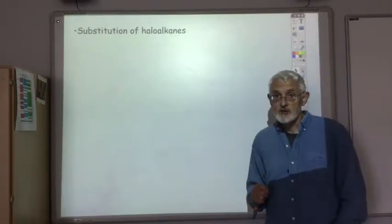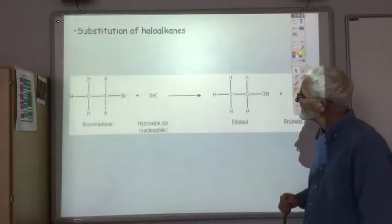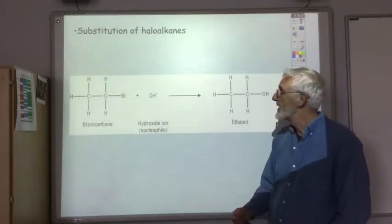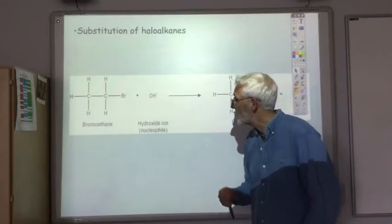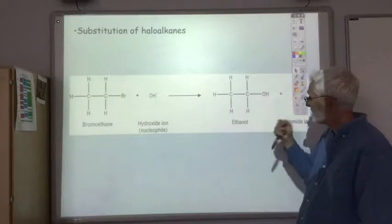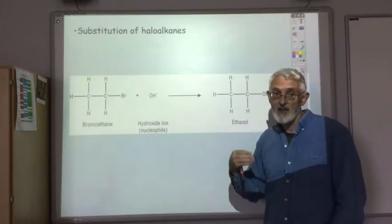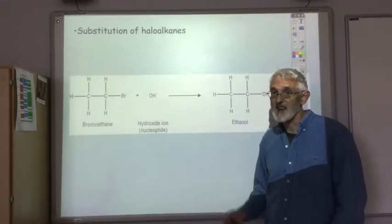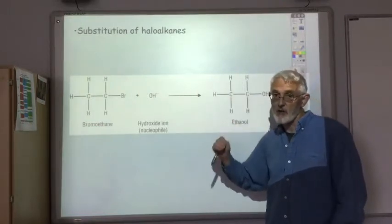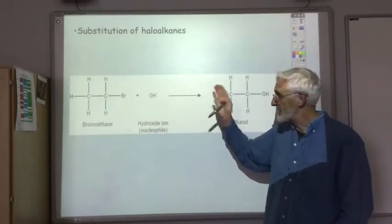You can make alcohols by substitution of haloalkanes, as we just saw in the previous section. Here's our haloalkane — carry out a nucleophilic substitution reaction. The nucleophile in this case is a hydroxide ion, and you replace the bromine with a hydroxide group. The conditions for this would be the hydroxide ion provided by either potassium hydroxide or sodium hydroxide dissolved in water. Remember, if it was dissolved in ethanol you would get an elimination reaction and you wouldn't get an alcohol.